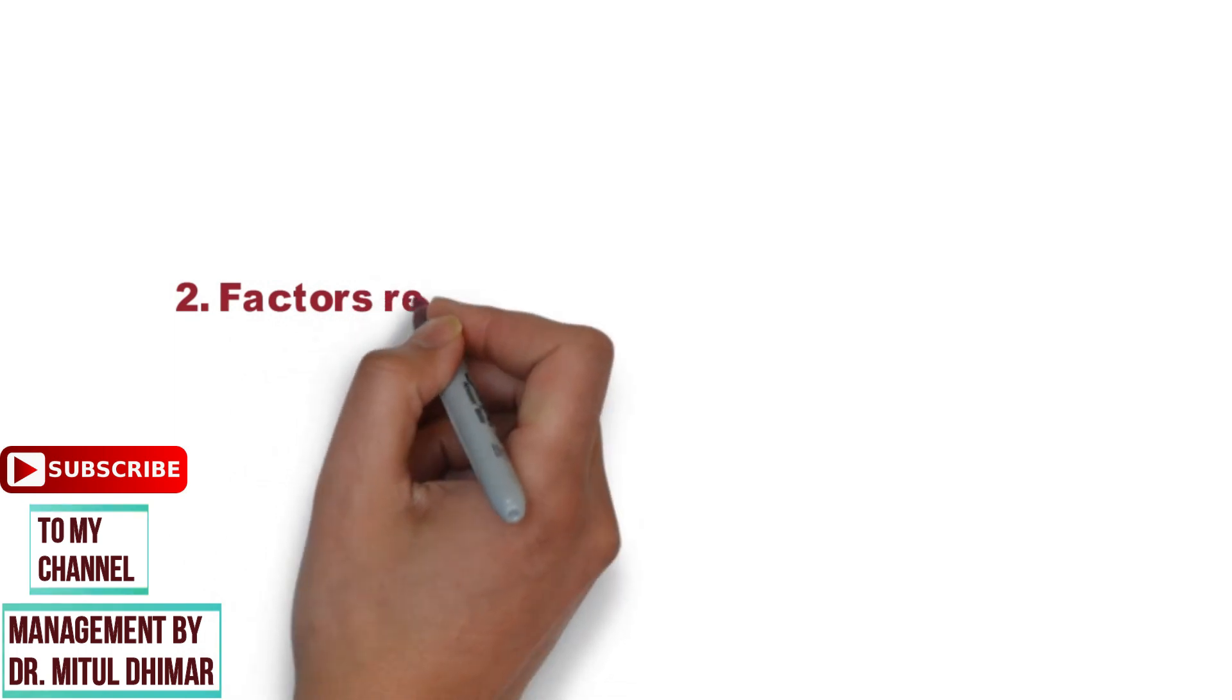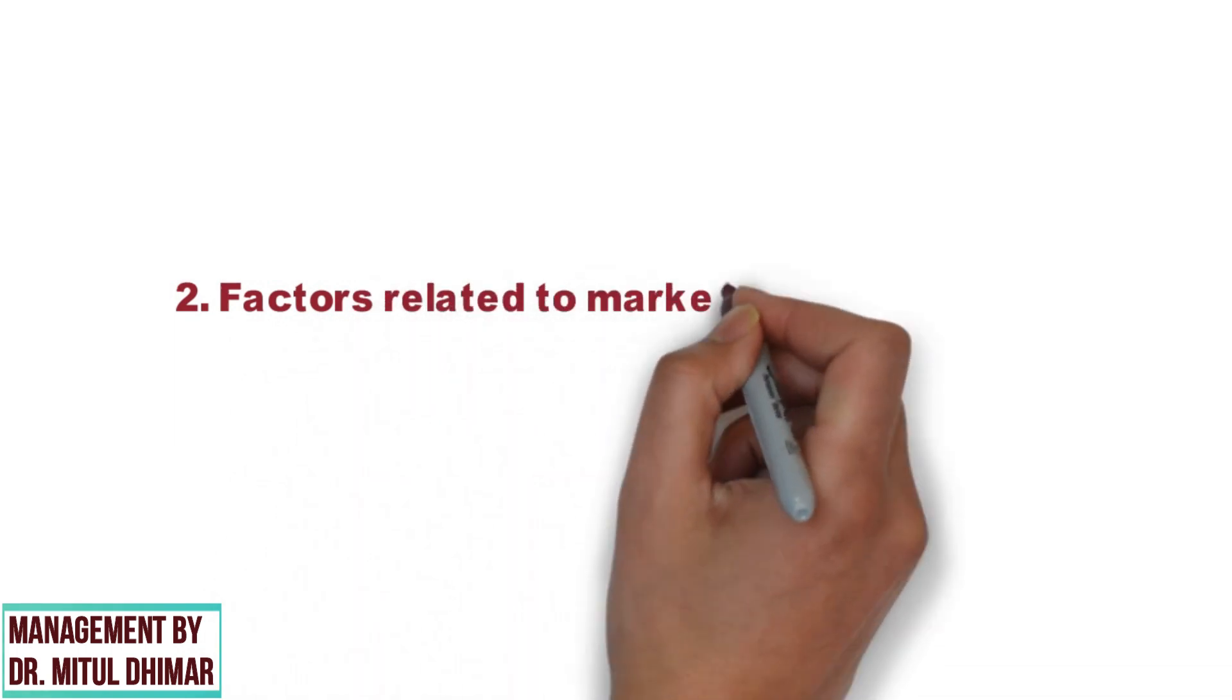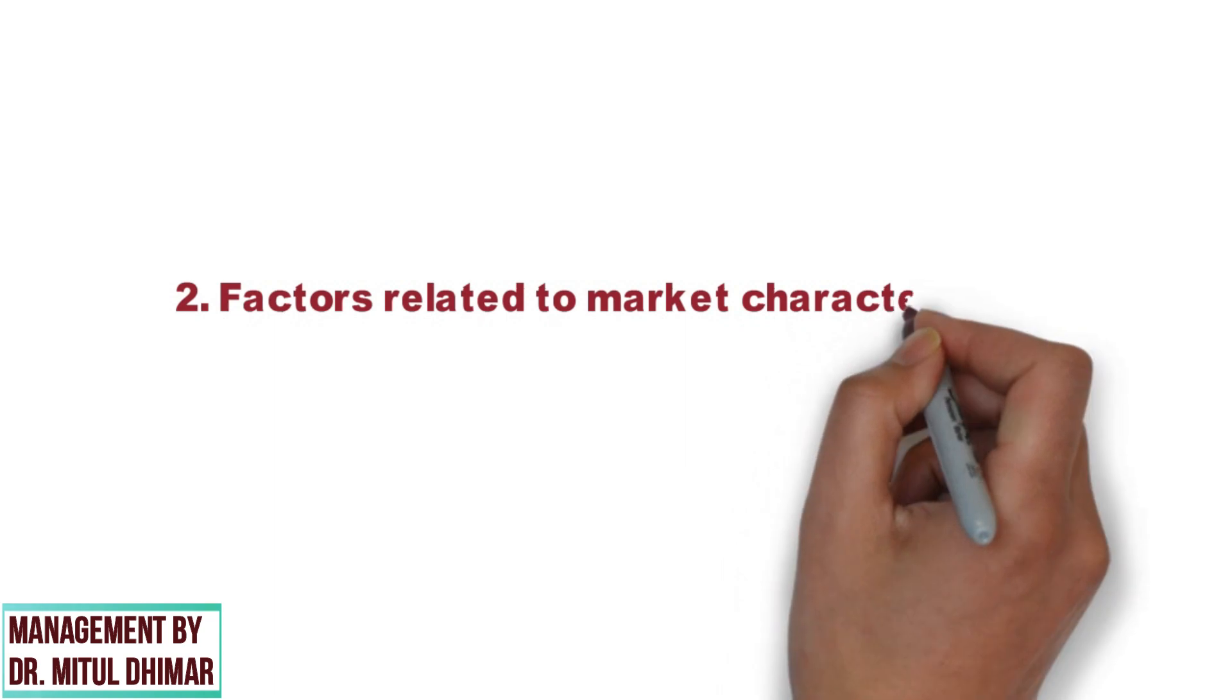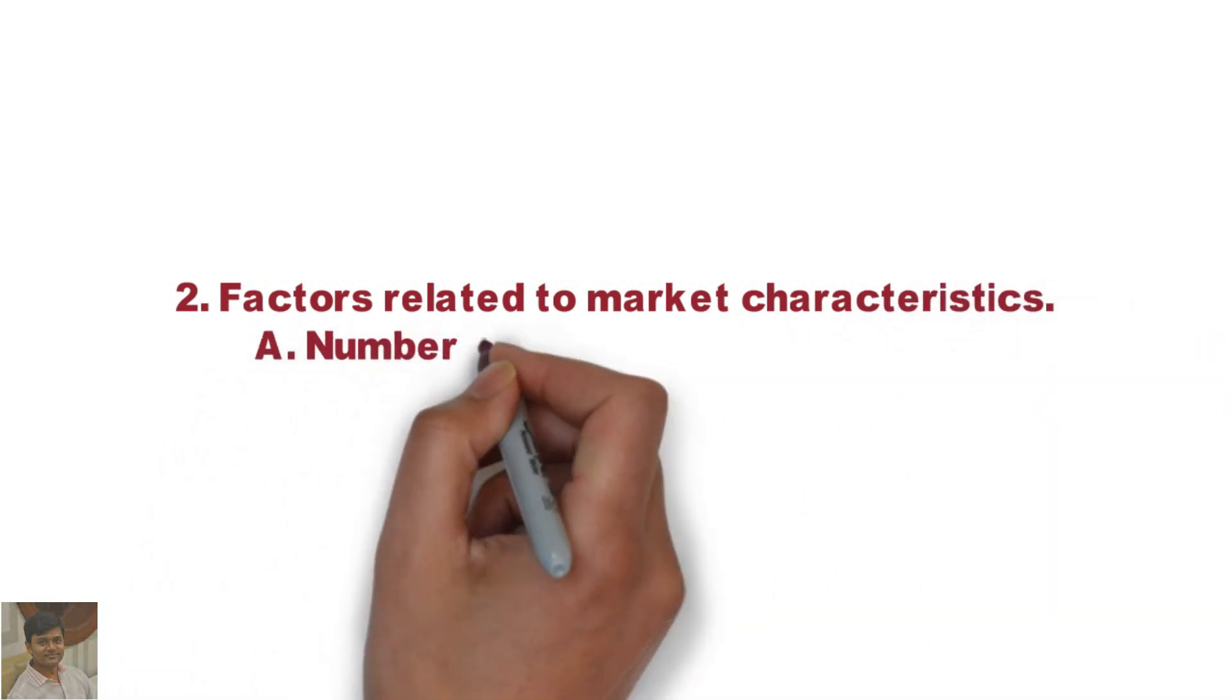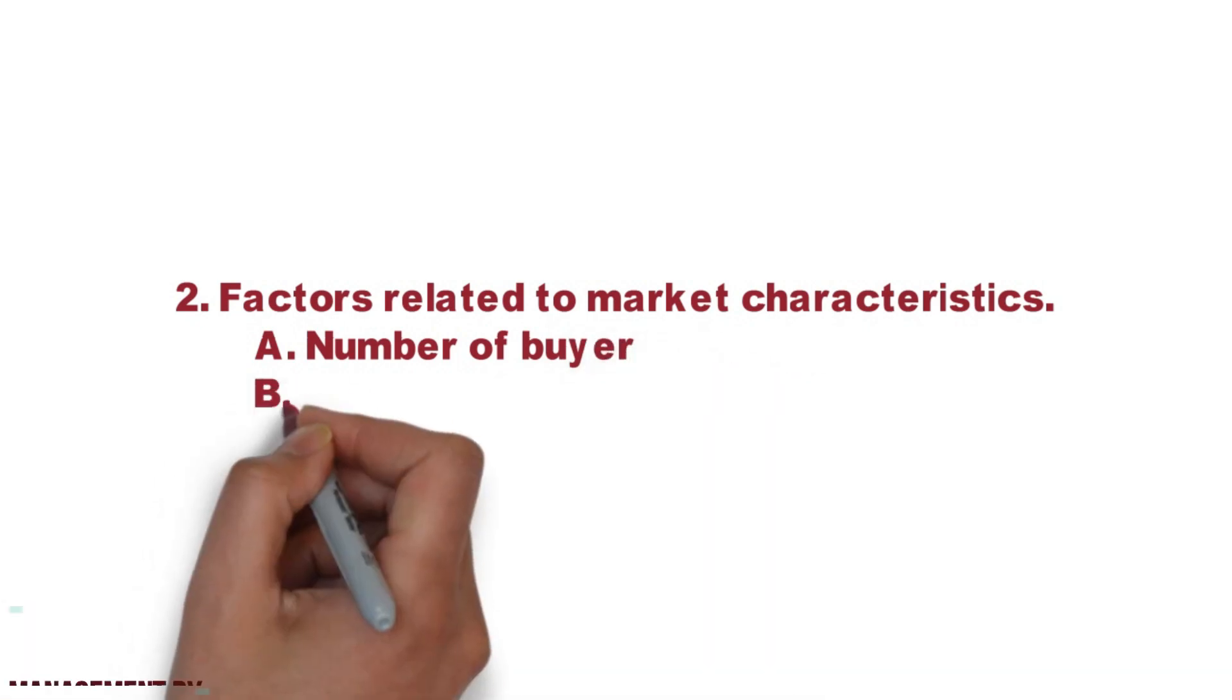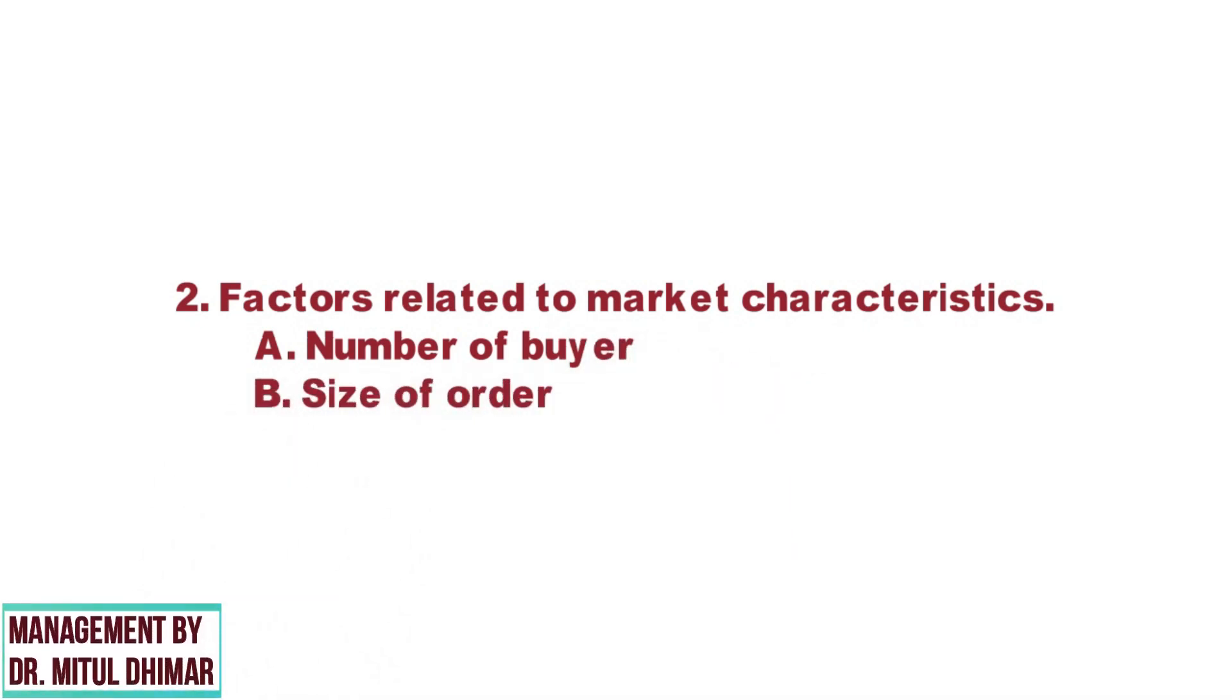The market characteristics is a crucial factor in channel selection. Following two factors we are going to study in detail: number of buyers and size of order.